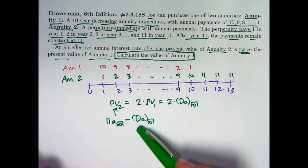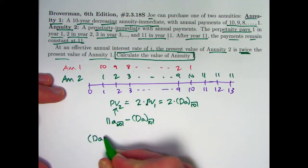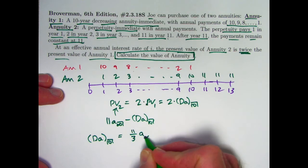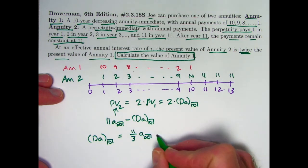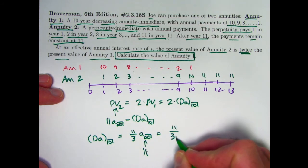We can certainly add DA 10 to both sides and then divide both sides by 3 to write this as DA 10, the present value of a standard decreasing annuity immediate, is 11 thirds times A infinity. A infinity is 1 over i, so this becomes 11 over 3i.